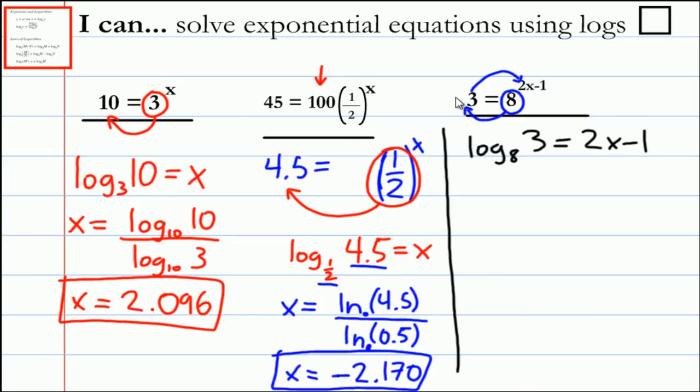We can use the change of base formula on the left side of the equation here. So we can rewrite this as log base 10 of 3 divided by log base 10 of 8. I just chose log base 10 because we have a button for it. You could have chosen any other base for these two logs, but 10 is just easy.